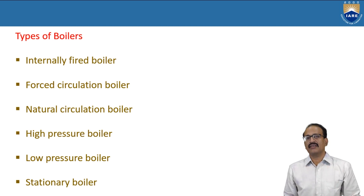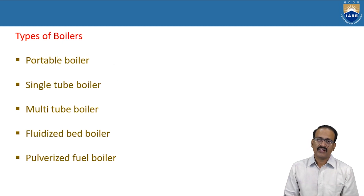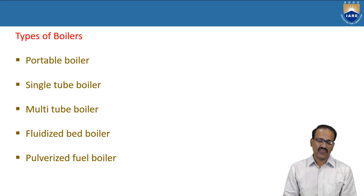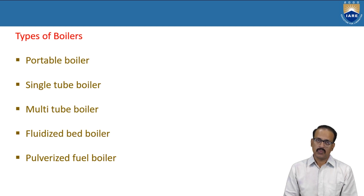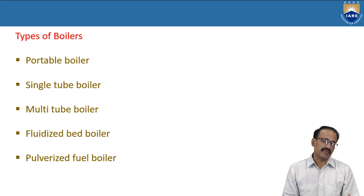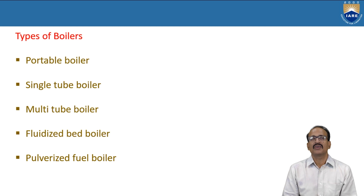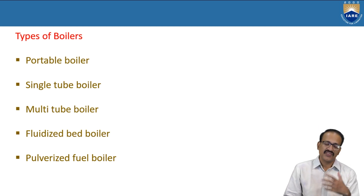Generally the boilers will be stationary, but there are some small types of boilers — like fire tube boilers and single tube boilers — which are portable and compact. In a single tube boiler, only one tube is there; efficiency is less. With multiple tubes, we increase the efficiency and performance.